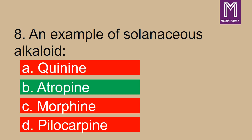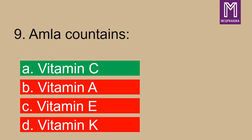An example of a solanaceous alkaloid? Correct answer: option B, atropine. Next, amla contains? Correct answer: option A, vitamin C.